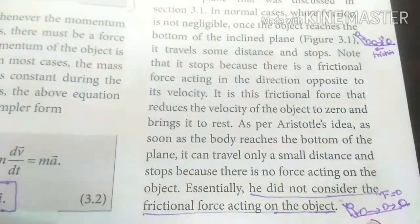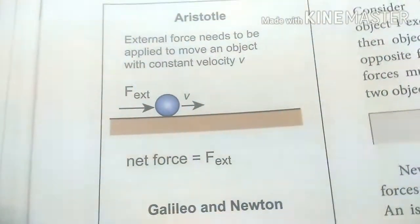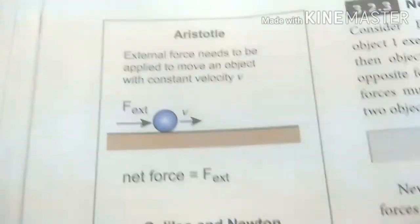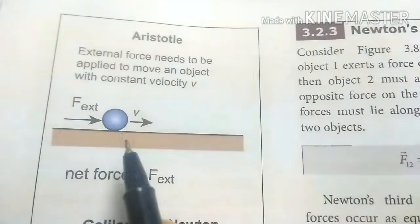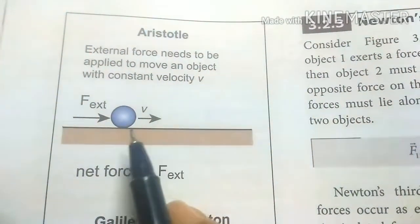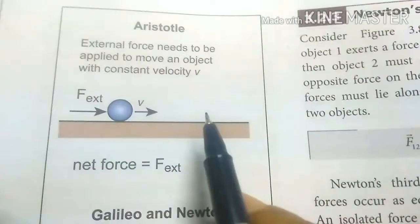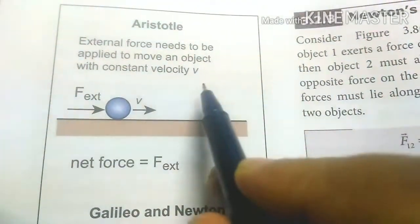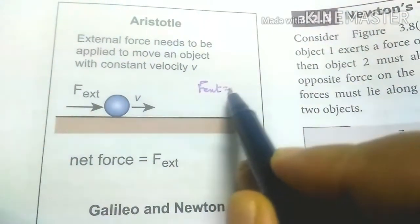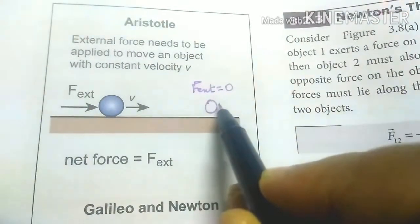This gives a clear picture about the views of Aristotle and Galileo-Newton. What does Aristotle say? Only an external force causes motion. When there is no external force, the object comes to rest. That is, when the external force is zero, the object comes to rest.